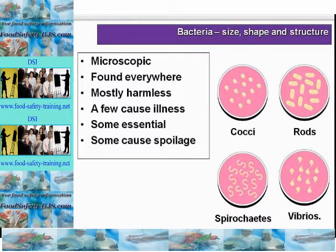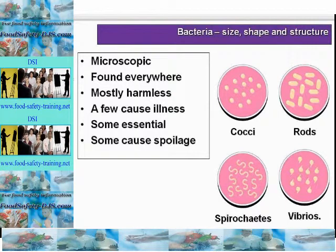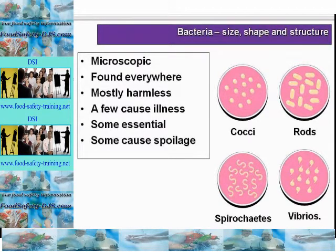Bacteria come in various shapes, as you can see on the slide showing how bacteria look under the microscope. First, cocci are round-shaped, for example Staphylococcus aureus. Bacilli are rod-shaped, for example Salmonella and E. coli. Spirochetes are spiral-shaped, for example Leptospira or Leptospirosis. Vibrios are comma-shaped, for example cholera.